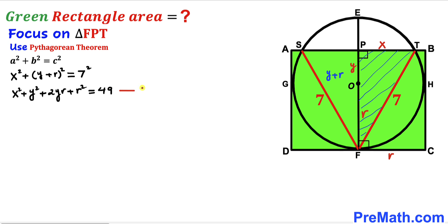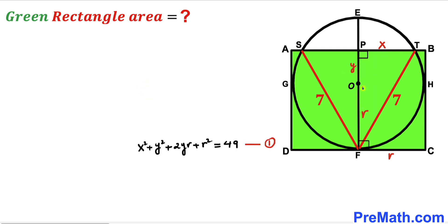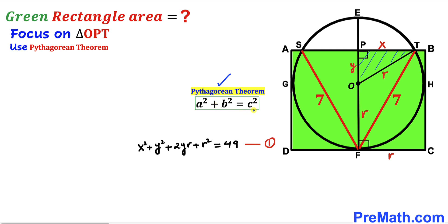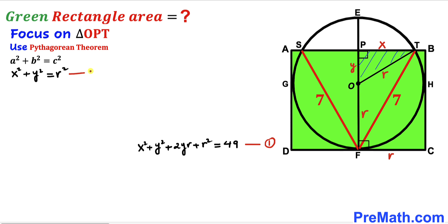Now I'm going to connect center O with point T and focus on right triangle OPT. We can see that OT is the radius r. Applying the Pythagorean theorem with hypotenuse r and legs x and y, we write: x² + y² = r². This is Equation 2.